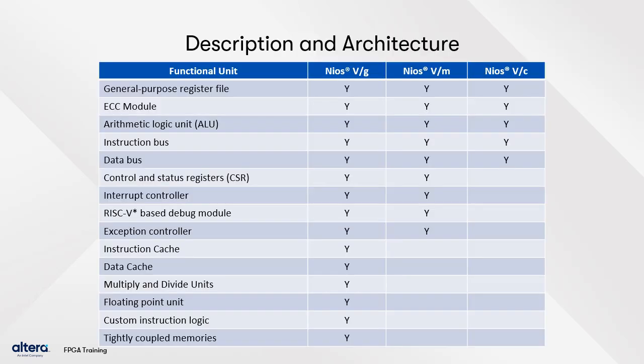The NEOs 5 processor architecture describes an instruction set architecture and requires certain functional units to operate. This table shows the functional units for each version of the NEOs 5 processor. One characteristic of NEOs 5G is the custom instruction logic, along with data and instruction caches as additional functional units. The three versions provide different capabilities that can help determine the best option for your performance, architecture, and functionality requirements.